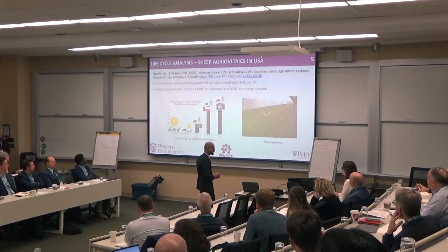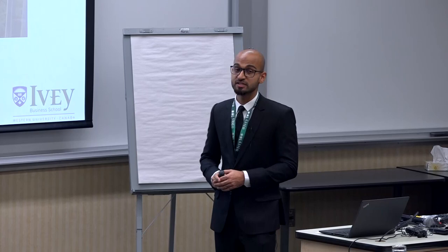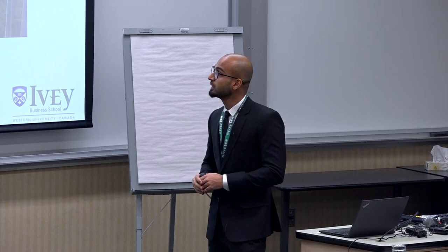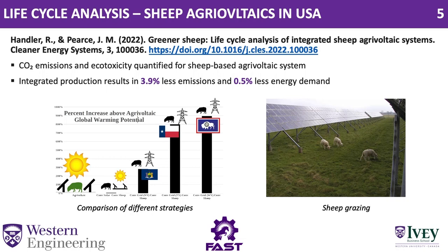Coming to the research done over the last year — the first paper I'm discussing is on a life cycle analysis for sheep Agrivoltaics. The research was conducted in the USA, and they estimated the CO2 emissions and eco-toxicity when incorporating sheep Agrivoltaics into farmland. The results showed 3.9% less emissions and almost 0.5% less energy demand if you have an integrated system doing sheep grazing on PV land, compared to doing the two things separately on separate pieces of land.